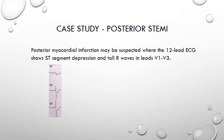A posterior MI should be suspected when leads V1 to V3 have ST depression and also have tall R waves, although not having tall R waves shouldn't stop you doing a posterior view of the heart. For some pre-hospital providers obtaining a posterior ECG is not necessarily required, but it is quite a simple and relatively quick thing to do. There is more than one method to get a posterior view of the myocardial wall, but for this video we'll look at one of the simplest.